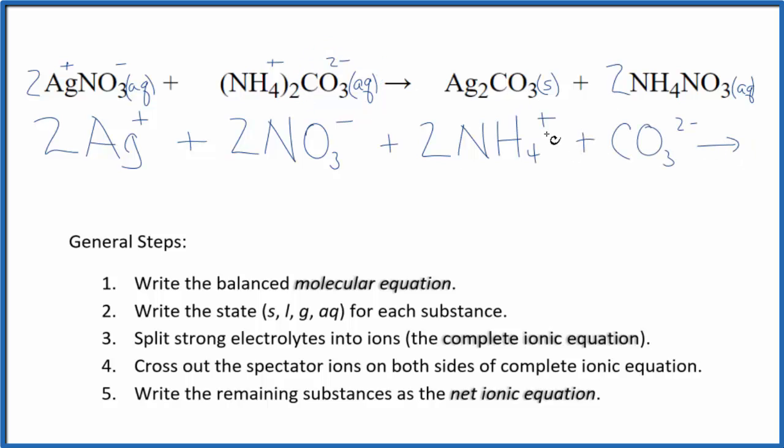These are the reactants in our net ionic equation. For the products, we don't split solids apart. So we're just going to write Ag2CO3, and that'll stay together.